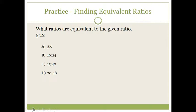Let's practice finding equivalent ratios. In your checkpoint, you have questions that ask you to find ratios equivalent to a given ratio. For example, let's find the ratios equivalent to five to twelve. I have different options to choose from, and I'm going to check each of them one by one using the cross product property. I'll set five over twelve equal to each other ratio and check if their cross products are equal. If the cross products are equal, the ratios are equivalent; if not, they are not equivalent.